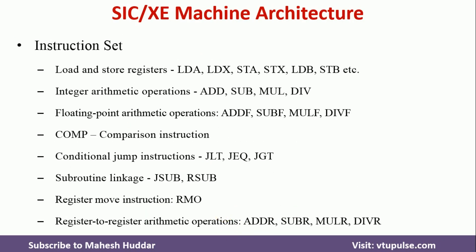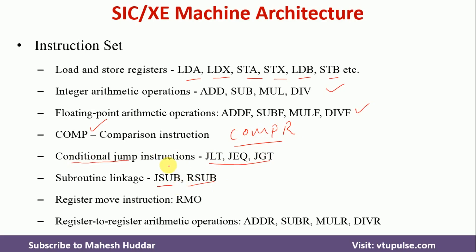These are the instructions supported in SIC-XE in addition to those in SIC. We have LDA, LDX, STA, STX from SIC, plus two more: LDB (load B) and store B. Along with normal arithmetic operations, SIC-XE also supports floating point arithmetic. We have COMP and COMPR to compare values of two registers. There are conditional jump instructions, JSUB and RSUB as in SIC, plus RMO (register move instruction) to move a value from one register to another. Register-to-register arithmetic operations include ADDR, SUBR, MULR, and DIVR.